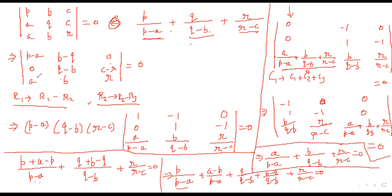Taking (p-a) common from the first column gives 1, 0, a/(p-a). Taking (q-b) common from the second column: b-q over q-b is -1, q-b over q-b is 1, b/(q-b). Third column: 0 over r-c is 0, c-r over r-c is -1, r/(r-c). So the matrix entries are: row 1: 1, -1, 0; row 2: 0, 1, -1; row 3: a/(p-a), b/(q-b), r/(r-c).